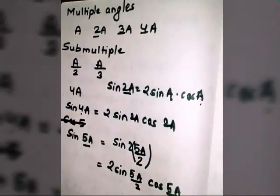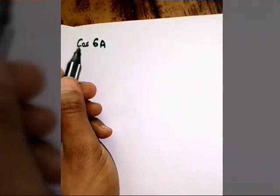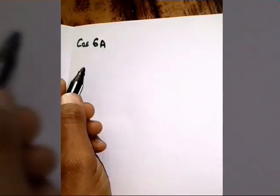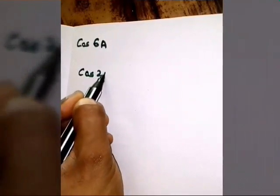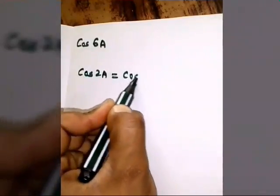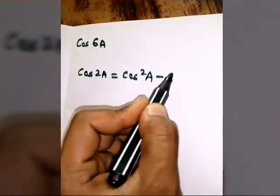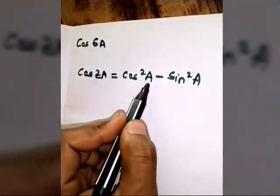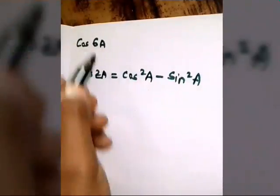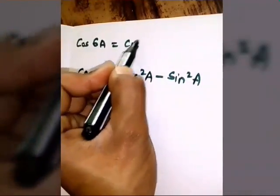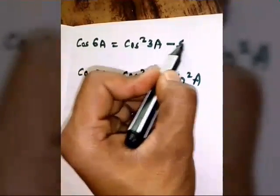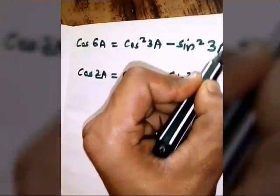Now let's find the formula of cos 4A. Using the original formula: cos 2A = cos²A − sin²A, the pattern is that the angle inside is half of 2A. So for cos 4A, we substitute: half of 4A is 2A. But let me use the example of cos 6A — half of 6 is 3 — so it becomes cos²3A − sin²3A.